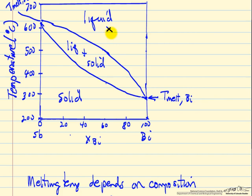Let's look at the case where we start with a liquid that's at 600 degrees centigrade and its mole fraction of bismuth is 0.6. As we lower the temperature, when we get to this point we start forming solid.